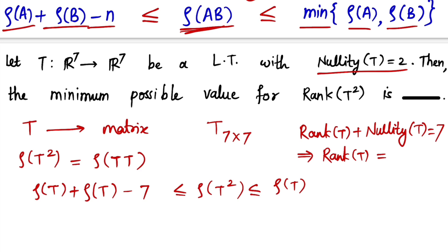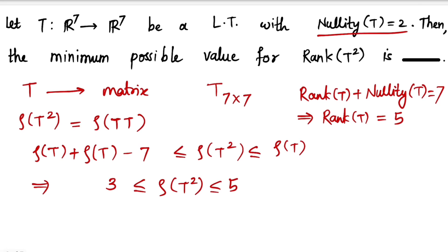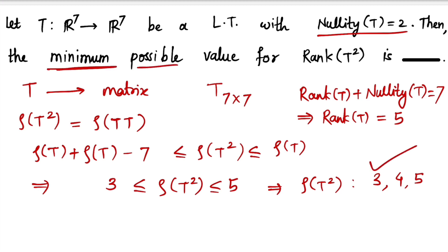From the rank-nullity theorem, rank plus nullity equals 7, so rank of T plus 2 equals 7, giving rank of T equals 5. Substituting: 5 plus 5 minus 7 equals 3, which is less than or equal to rank of T squared, which is less than or equal to 5. So rank of T squared can be 3, 4, or 5. The minimum possible value is 3, and if they had asked for the maximum it would be 5.